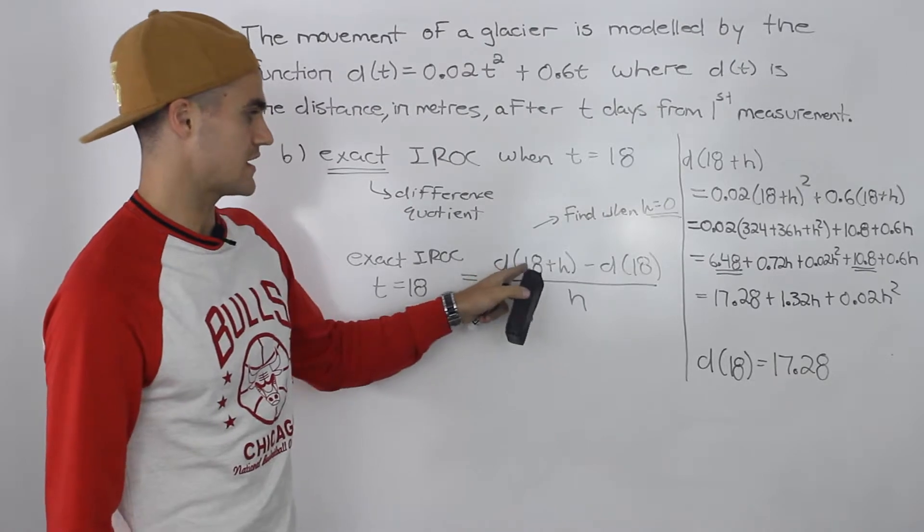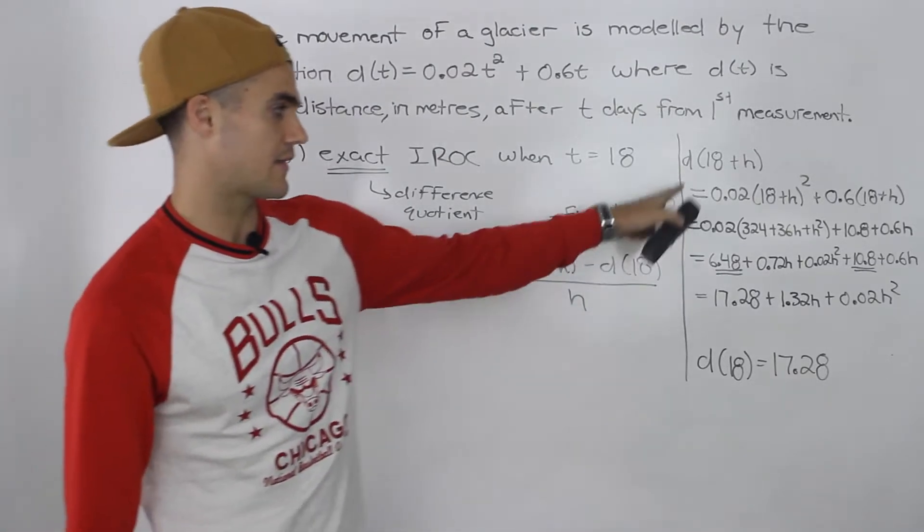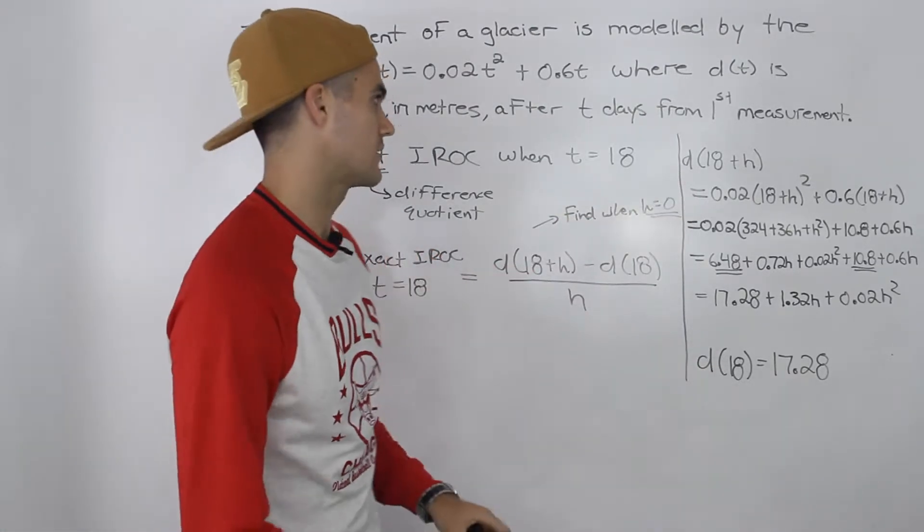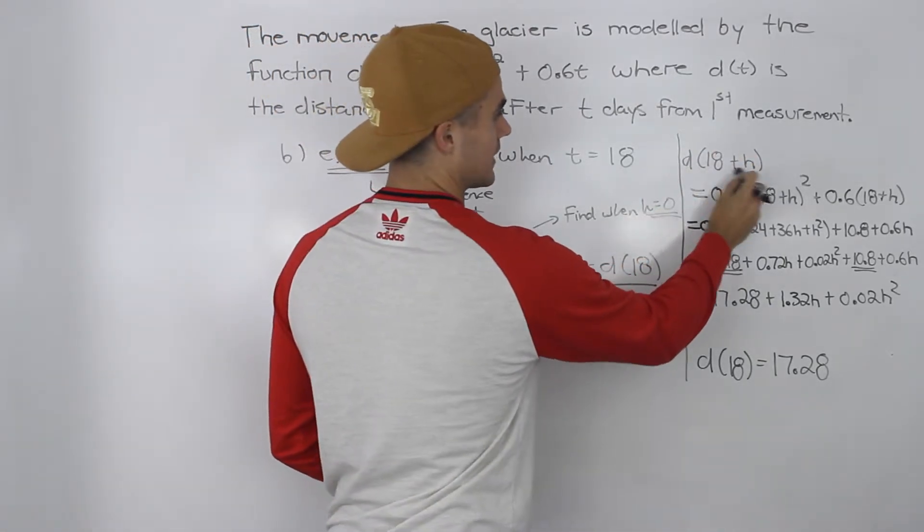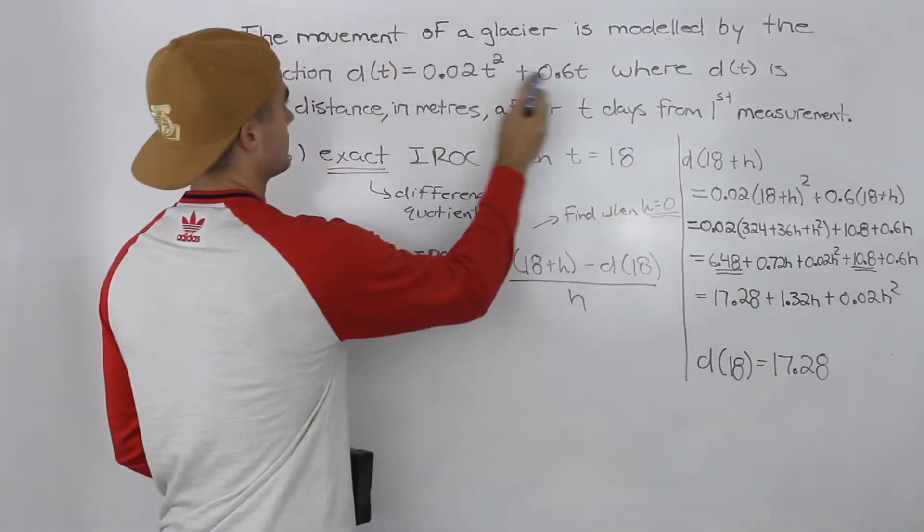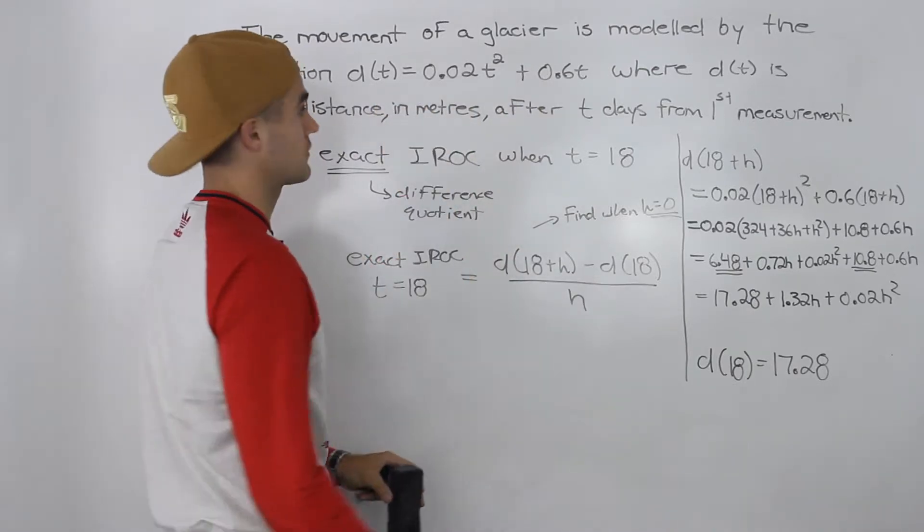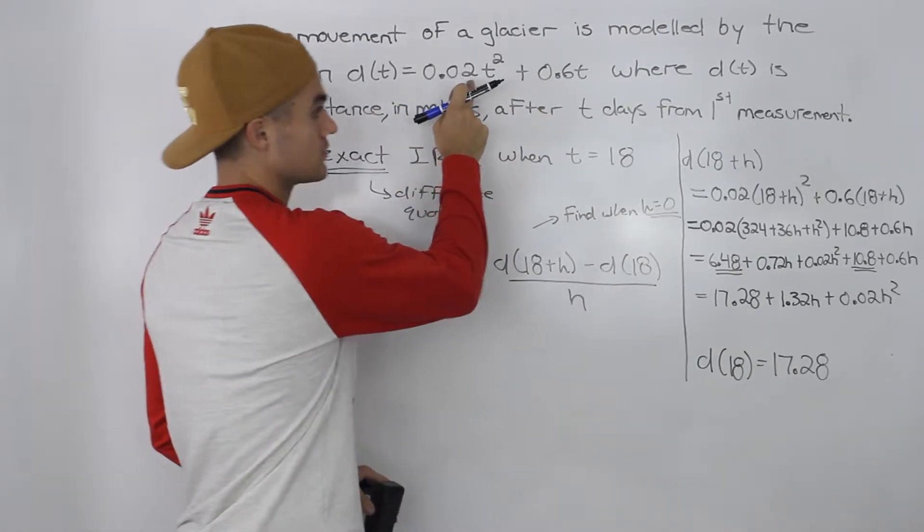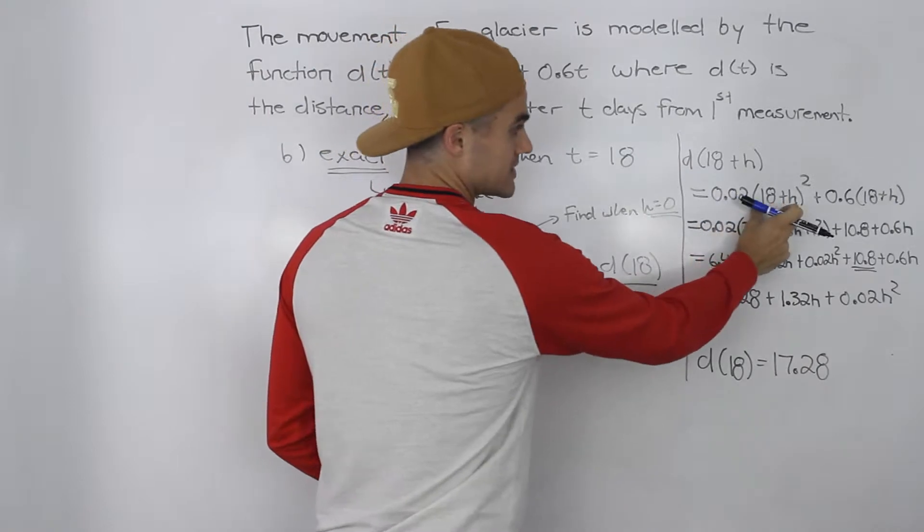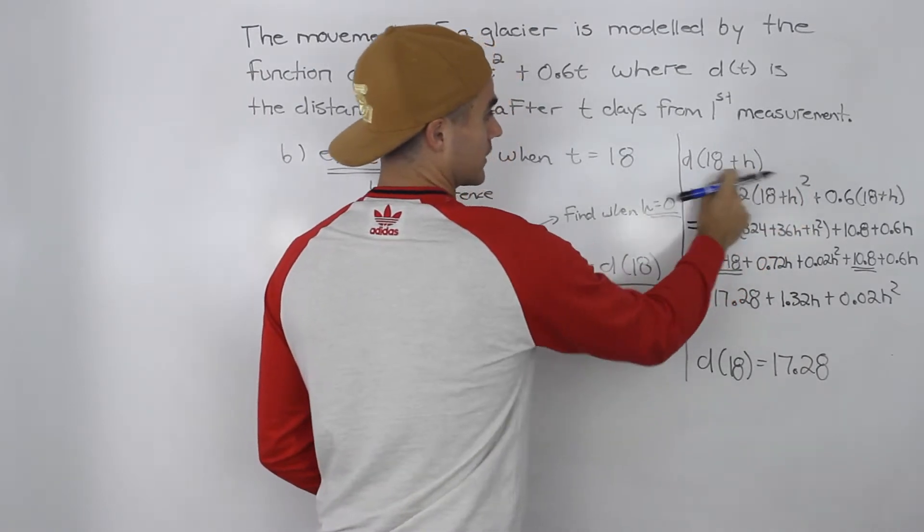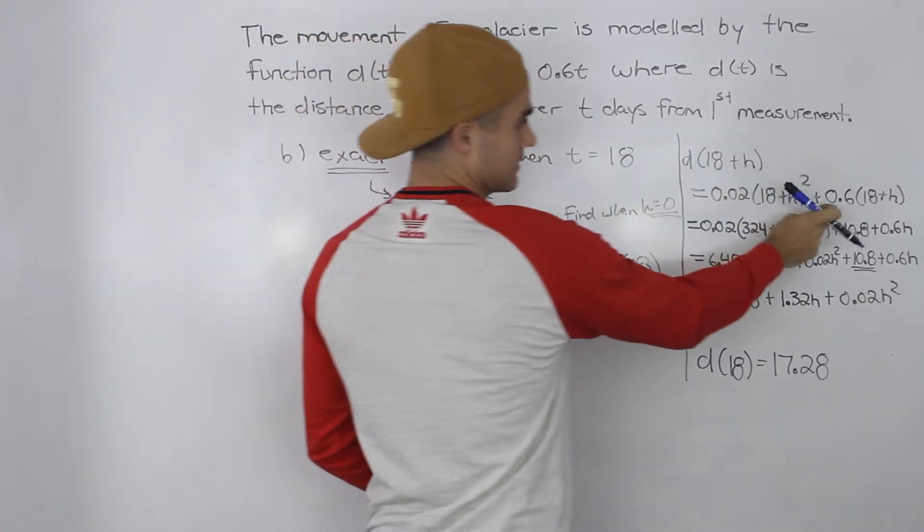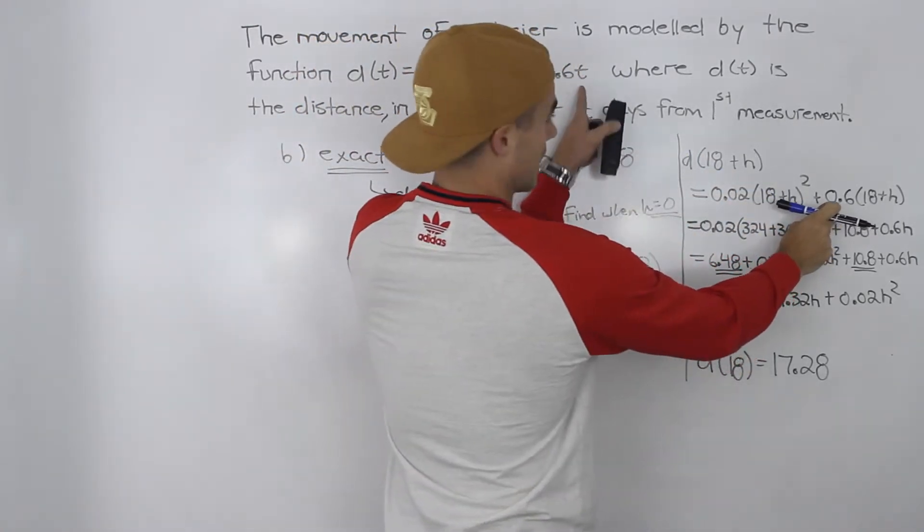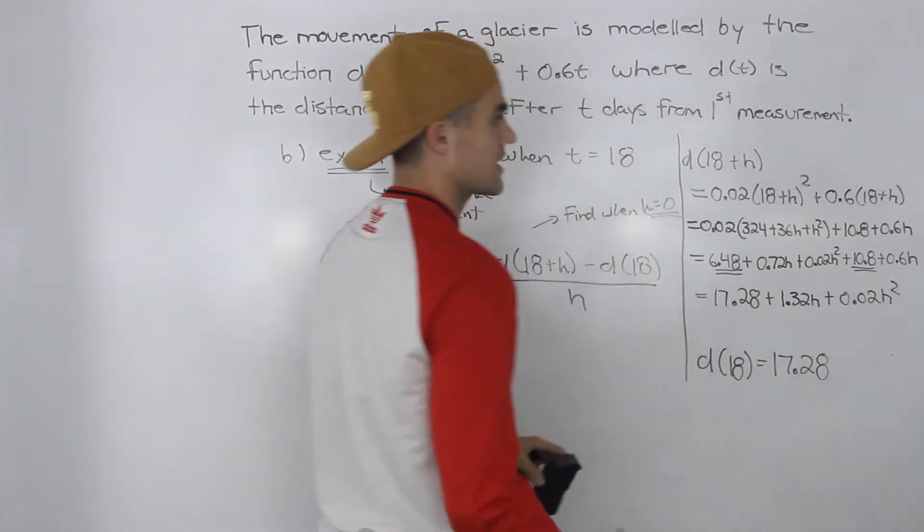Now what I did was I took d(18+h) and d(18) and figured it out on the side. The way you do that: for d(18+h), you just plug in 18+h for the t values in the function. So 0.02(18+h)² plus 0.6(18+h).